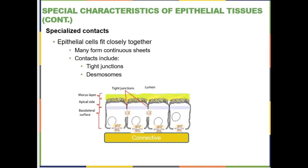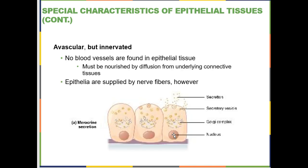Epithelial cells also tend to have lots of contacts between them, predominantly tight junctions and desmosomes. Tight junctions are there to make sure that whatever is on one side of the epithelium stays on that side — those are the watertight junctions that prevent water and solutes from sneaking in between cells. Desmosomes hold the epithelium together and then attach the epithelium to any tissue underneath it, in this case some sort of connective tissue.